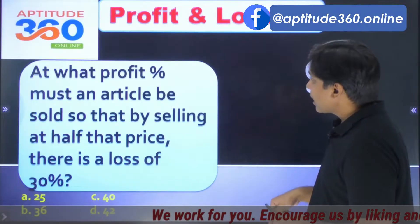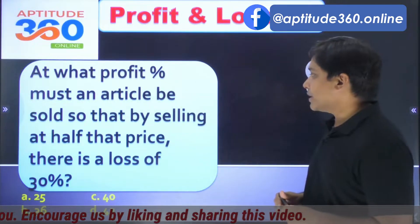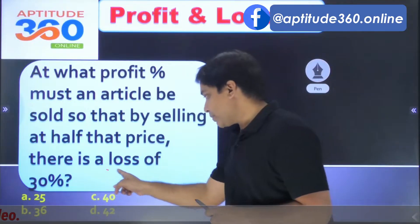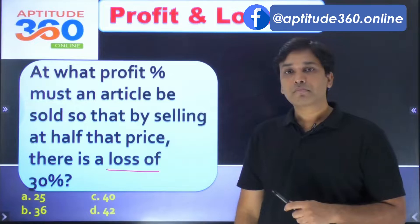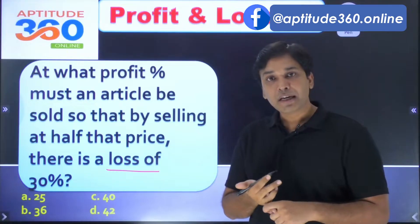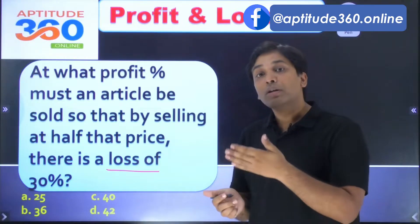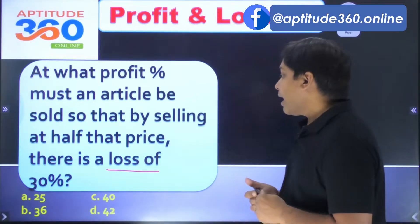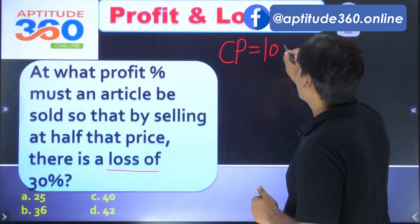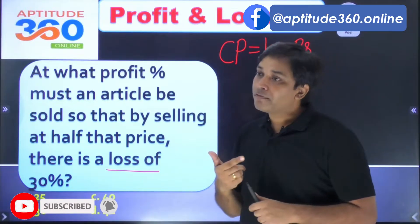Let us get started and try to solve this problem. It says: at what profit percent must an article be sold so that by selling at half that price there is a loss of thirty percent? Profit percent is always calculated on the cost price. So I will assume that my cost price is 100.